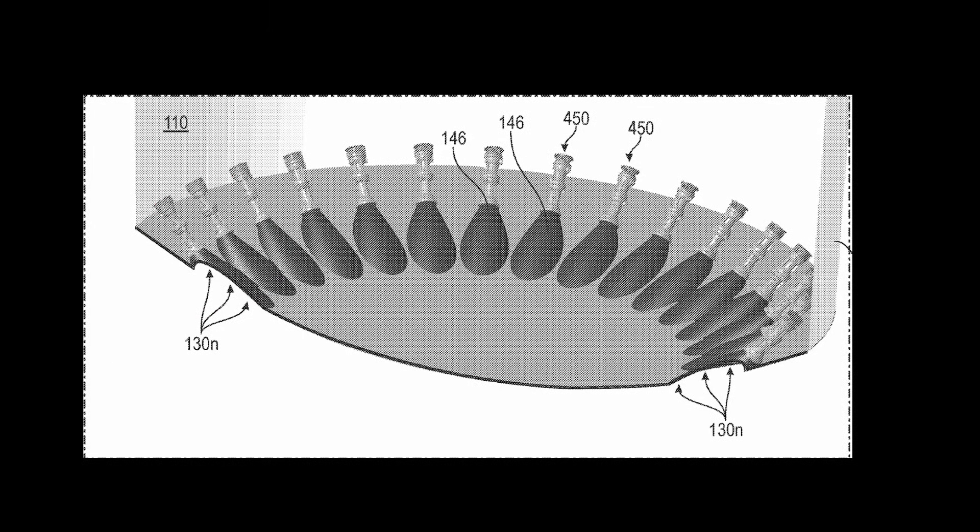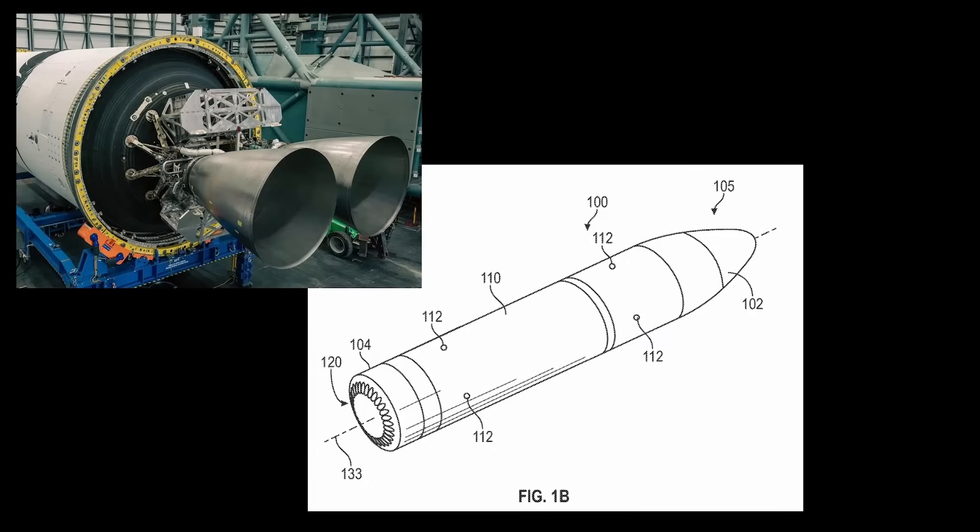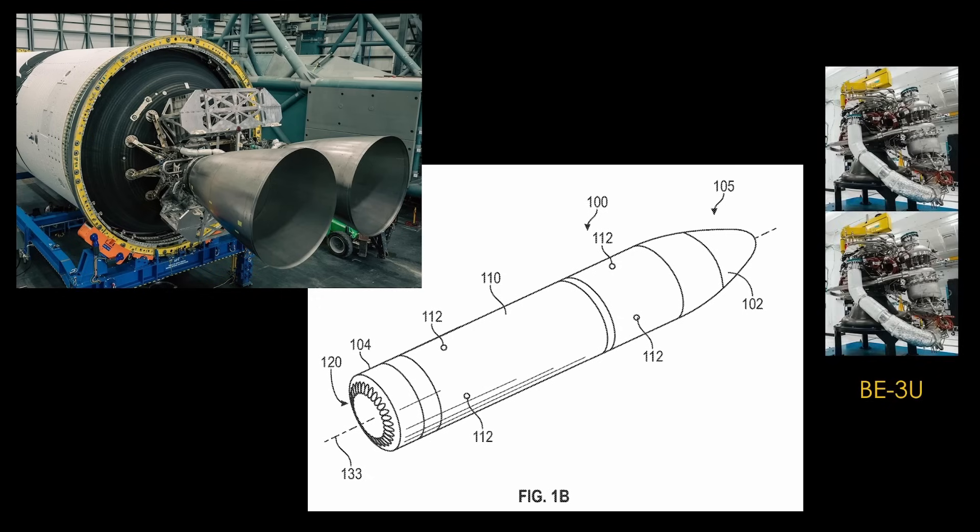Here's a side view that shows the bottom of the stage and the thrust modules. Instead of the two standard BE-3U engines planned for the New Glenn upper stage, this device would use two BE-3U power packs, everything except the combustion chamber and the nozzle, to feed the thruster modules in the ring.